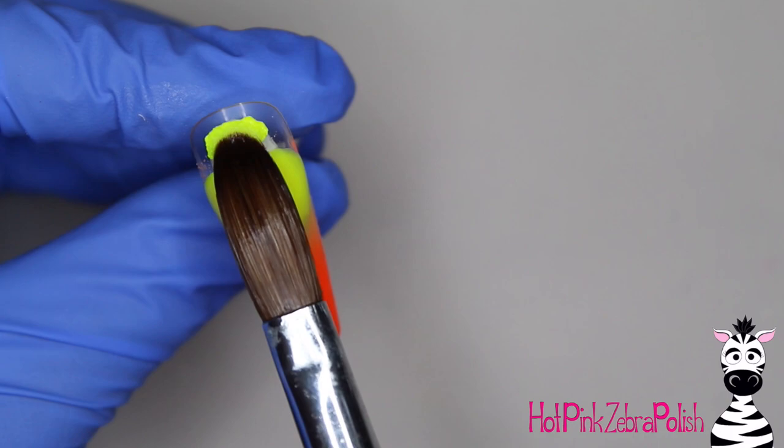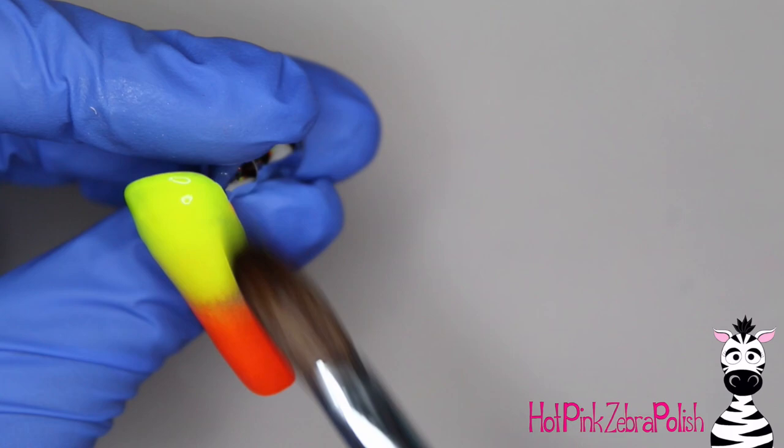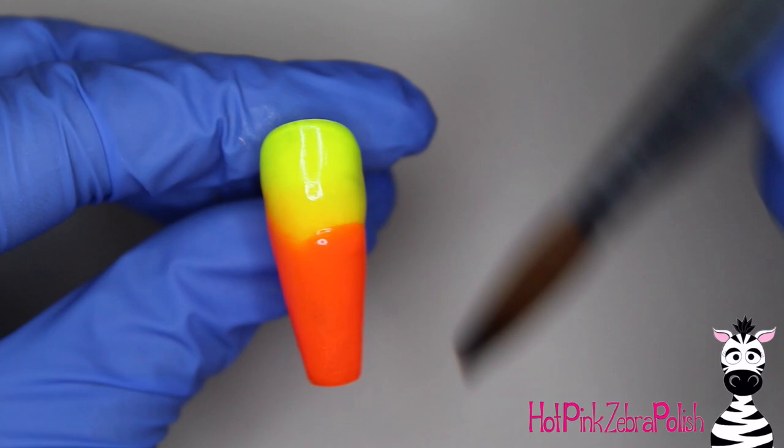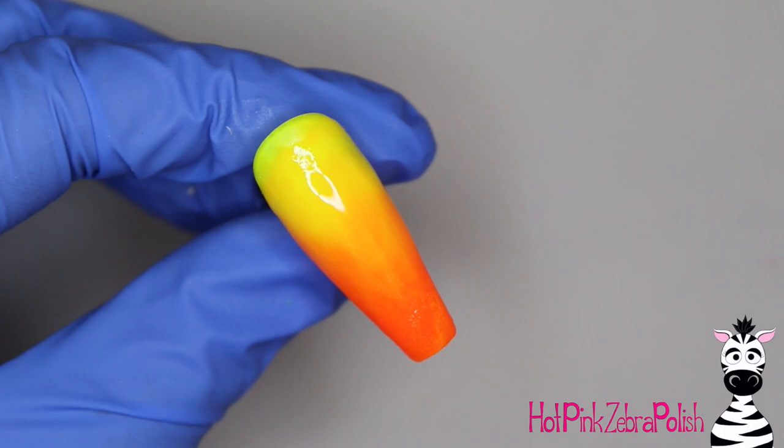But I really love this gradient, and if you were doing this as part of a set, you could still do this gradient on the rest. But for this nail in particular, if you don't want to take the time to sculpt a gradient, it's really not necessary just because you can't even see it. So that's kind of one of those either way sort of a deal.